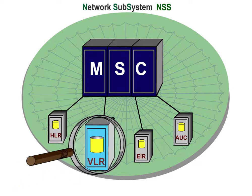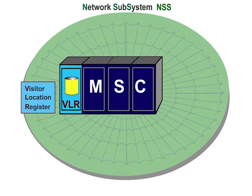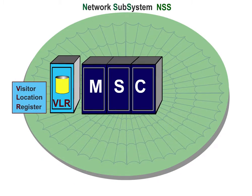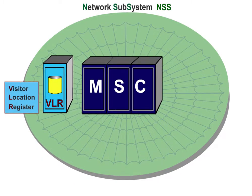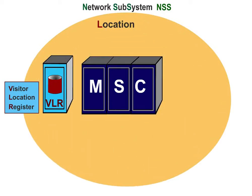One of these registers is the Visitor Location Register, VLR, which is usually to be found in the MSC, but is a functional unit in its own right. It is designed as a dynamic subscriber file, with dedicated geographical areas of responsibility, the so-called location areas.